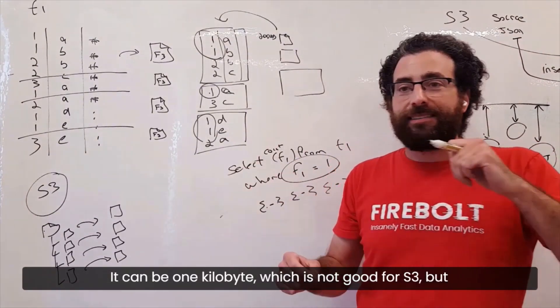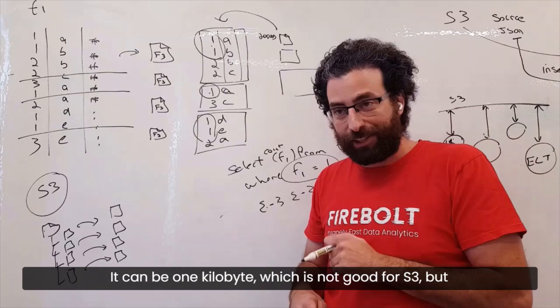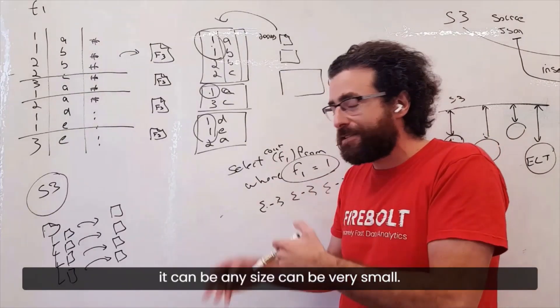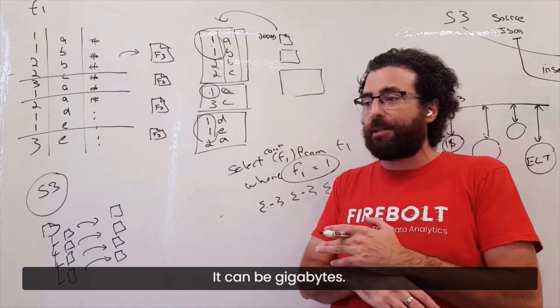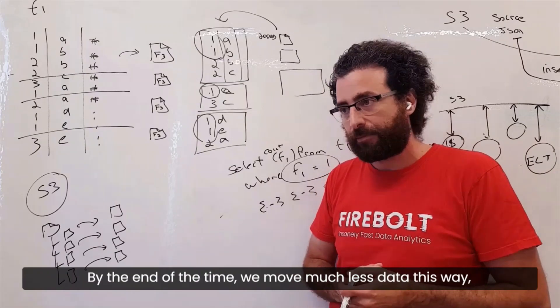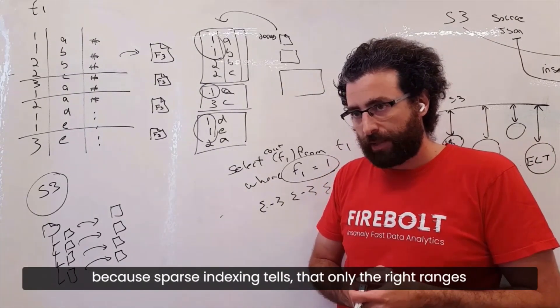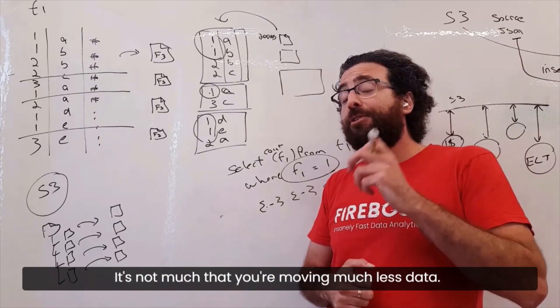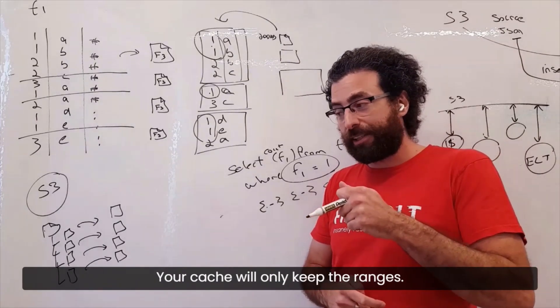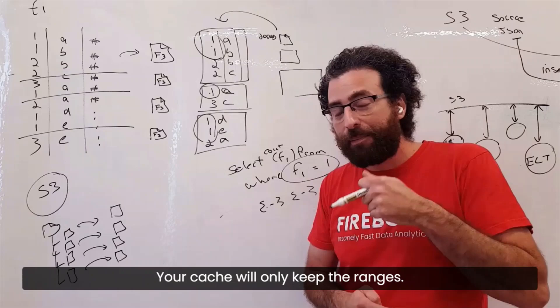It can be one kilobyte, which is not good for S3, but it can be any size. It can be very small, it can be huge, it can be gigabytes. But at the end of the day, we move much less data this way because the sparse indexing tells us only the right ranges. It's not just that you're moving much less data, your cache will only keep the ranges.